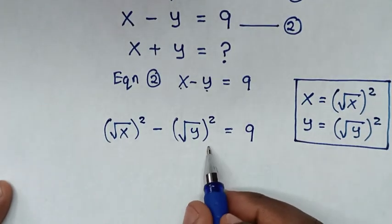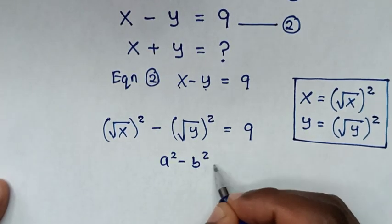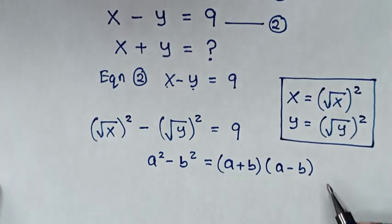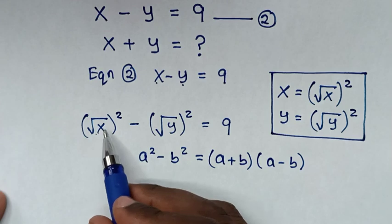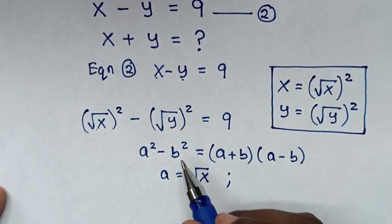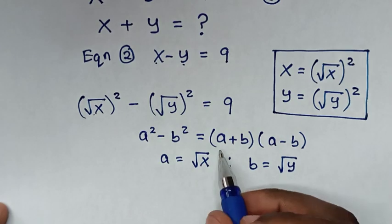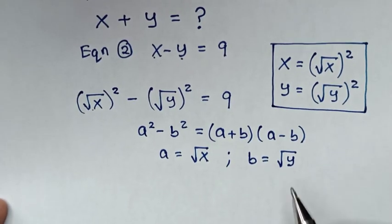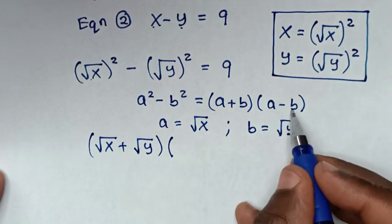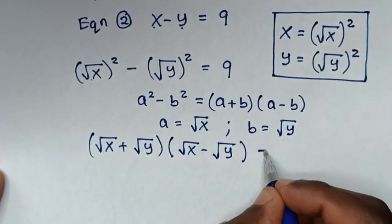The left side is now in the form of a difference of squares. We apply the rule a² minus b² equals (a + b)(a − b). Comparing, a equals √x and b equals √y, so it becomes (√x + √y)(√x − √y) equals 9.